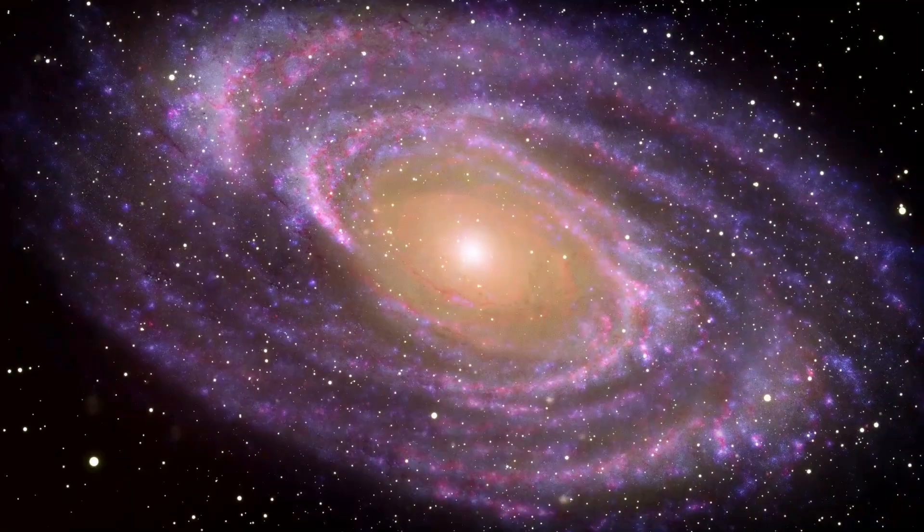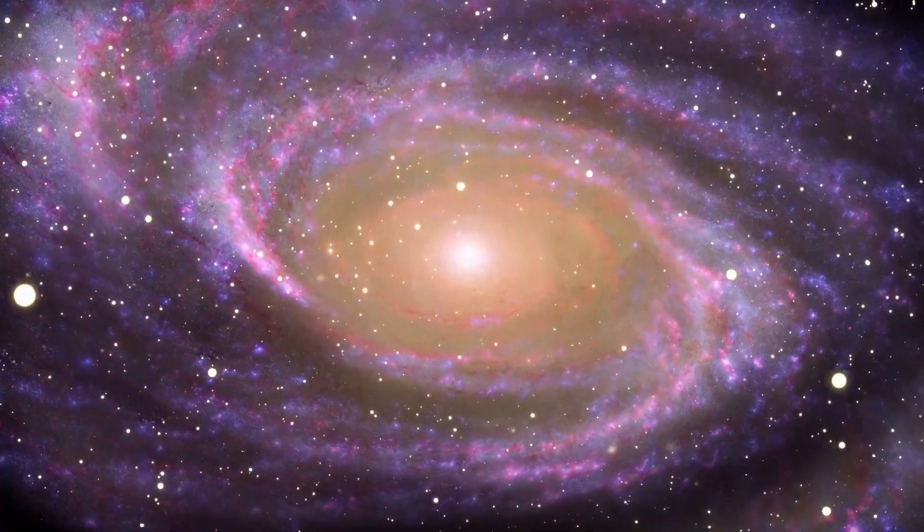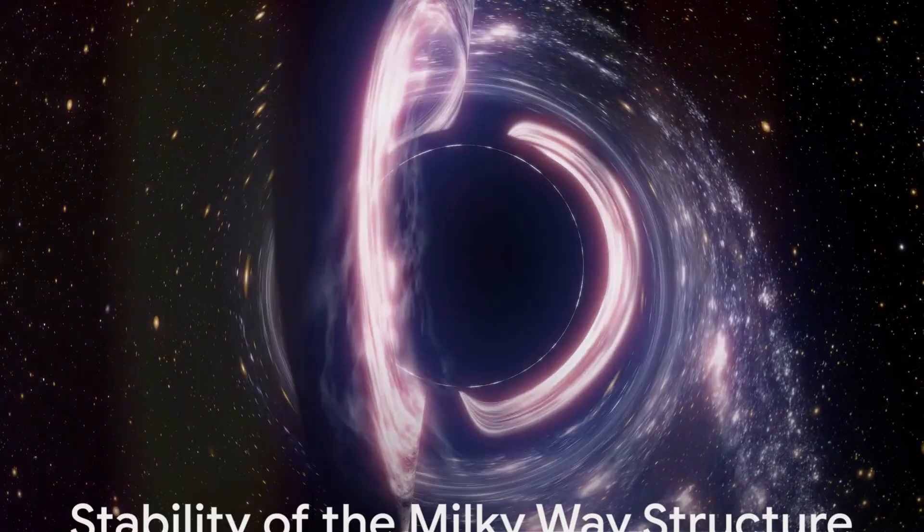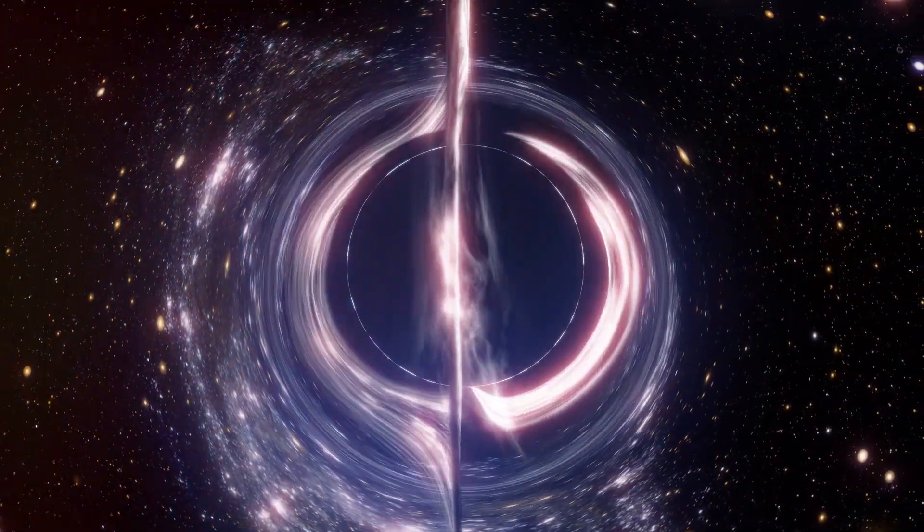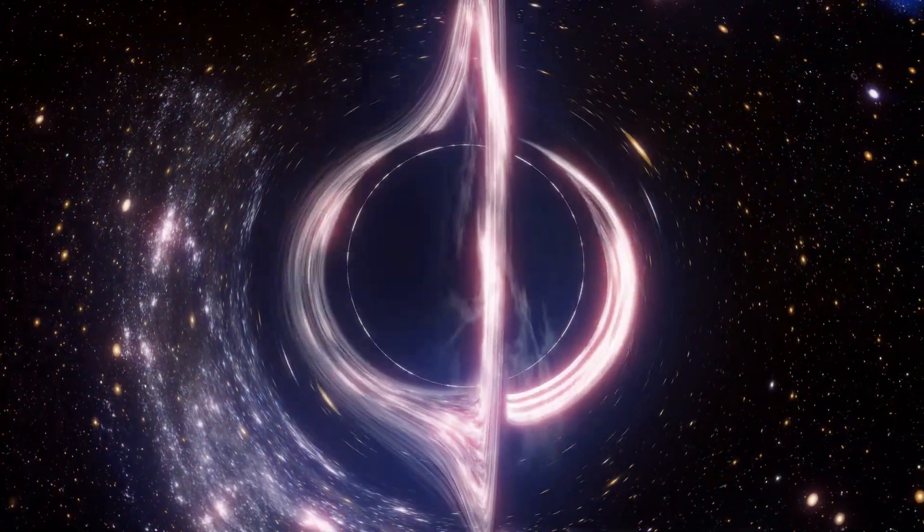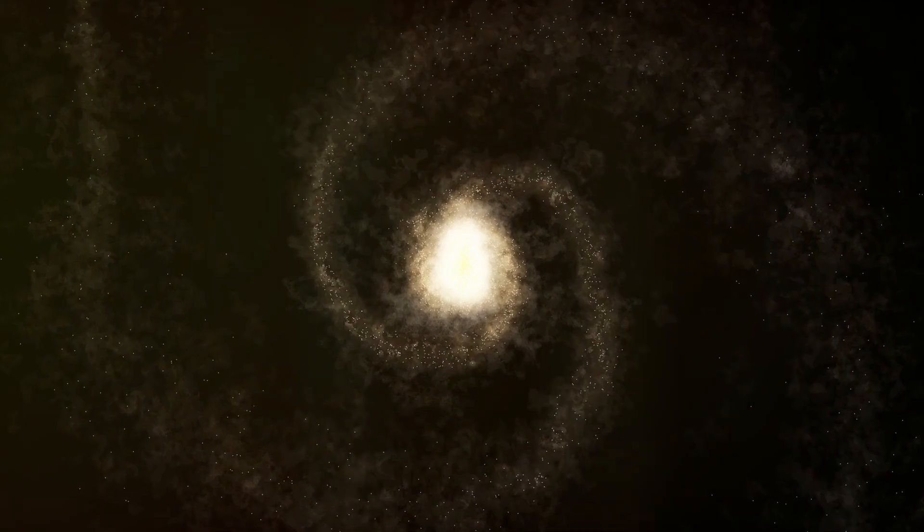Our galaxy's true stability comes from the complex dance of stars, gas, and dark matter, all working together. Now that we understand the role of our supermassive black hole in the Milky Way, let's dive into the real question. What would happen to nearby stars and objects if it suddenly disappeared?